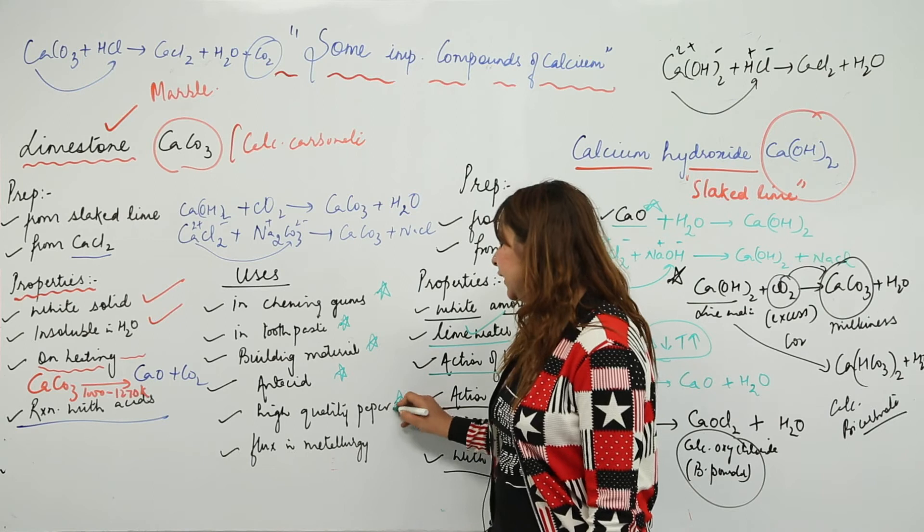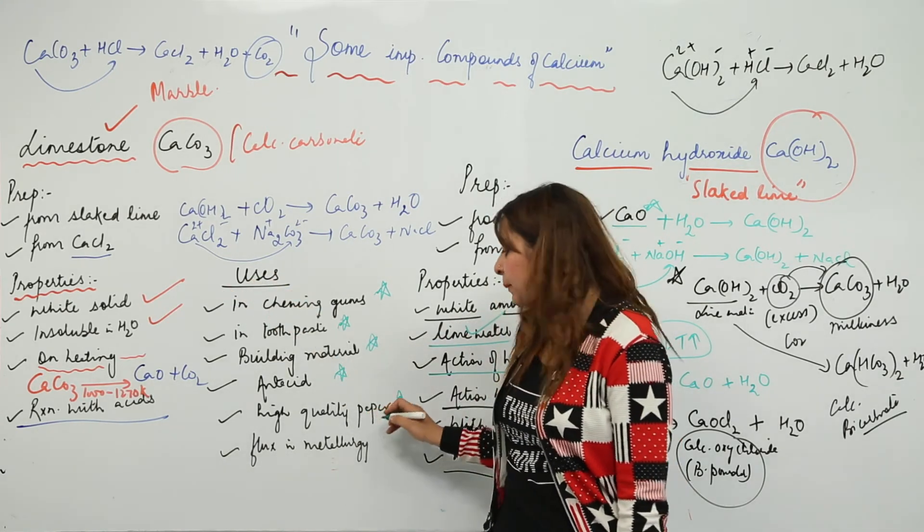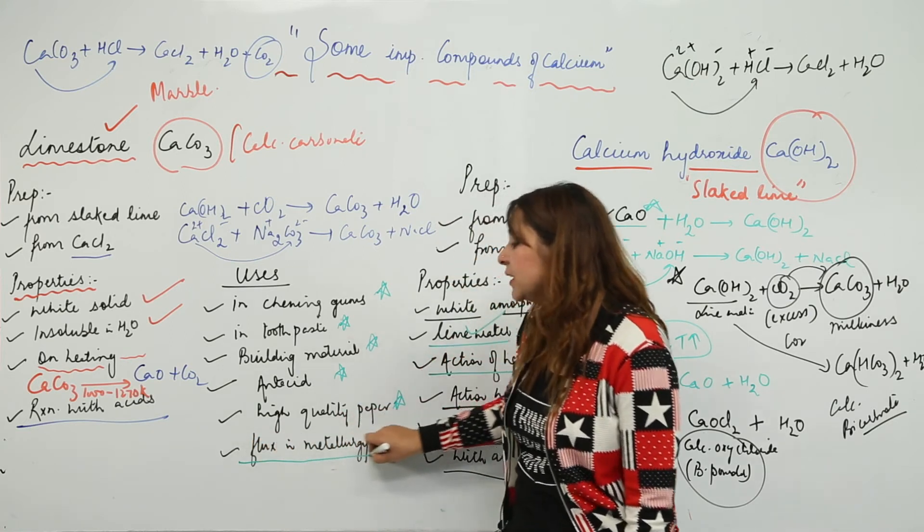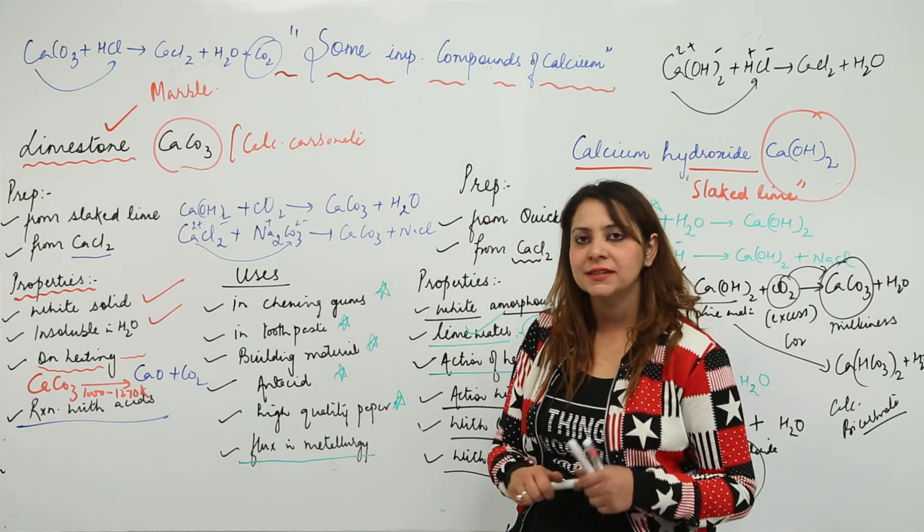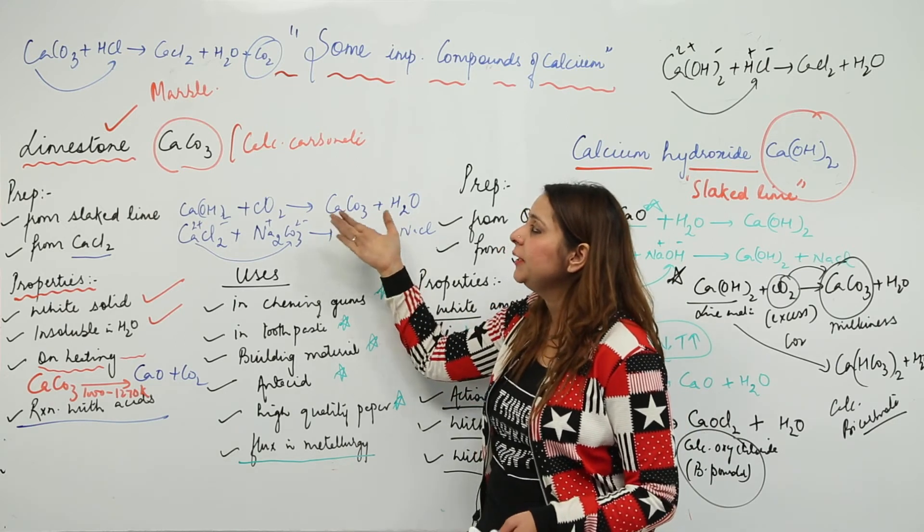Moreover, highly precipitated calcium carbonate is used in making high quality paper also, and it is a flux in metallurgy.